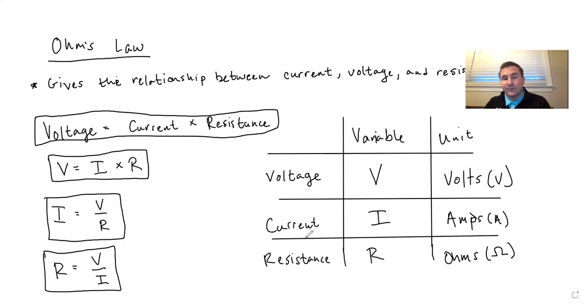Voltage is V measured in volts. Current is an I measured in amps. And resistance is an R measured in ohms. So get this into your lab notebooks.